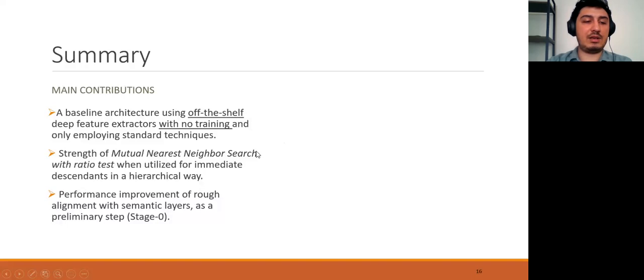As a summary, our main contribution is threefold. First, we have presented a baseline architecture using off-the-shelf deep feature extractors with no training and only employing standard techniques. Second, we have shown the strength of mutual nearest neighbor search with ratio test when utilized for immediate descendants in a hierarchical way. Finally, we have also shown the performance improvement of rough alignment using semantic layers as a preliminary step. In other words, our stage 0.